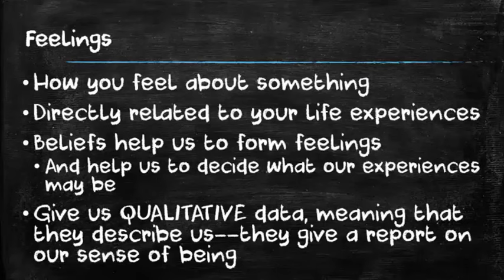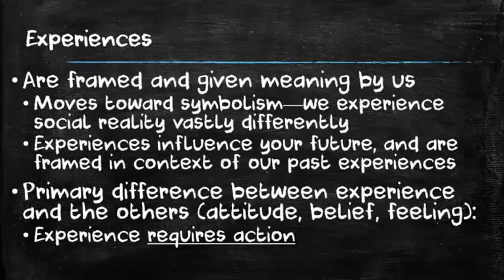Feelings relate to how you feel about something and are directly related to your life experience. Most of the time when we measure a feeling, it relates to some experience you've already had or whether you decide to have an experience in the future. Our belief system helps us form those feelings. Feelings are qualitative data — they describe us, they're descriptive data, and they give a report on our sense of being. These measurements are arbitrary, and it helps to measure them against the opposing feeling. We can use a Likert scale to narrow in on feelings more accurately.